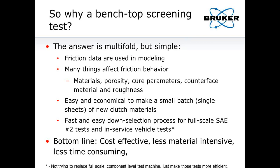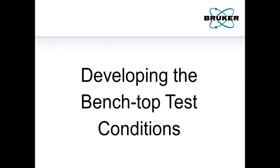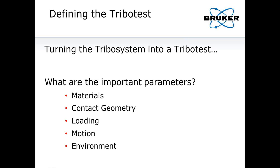The small-scale tests will rank materials and show the same type of behavior we expect in the full scale. However, the dynamics of a small-scale test are not the same — we don't build a full clutch. We're really focusing on the material aspect itself. Here's how we developed the benchtop conditions by turning the TRIBO system into a TRIBO test. My five important parameters are: materials, contact geometry (both macro and micro), loading, motion, and environment.